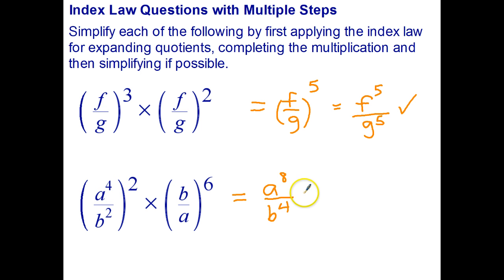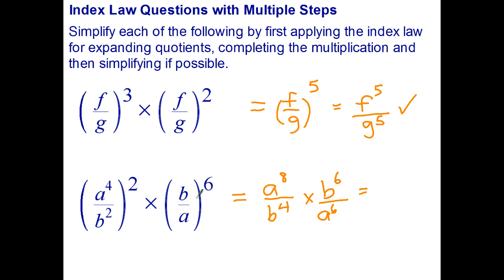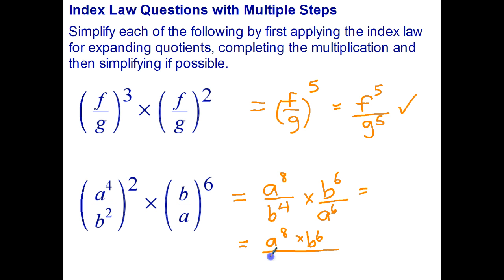Okay, let's do the second one — that's B to the power of six over A to the power of six. Once again we apply index law number four — we put the power on both the numerator and denominator. Now we can simplify. Since we're multiplying, we can write this as a single fraction: A to the eight times B to the six over B to the four times A to the six.